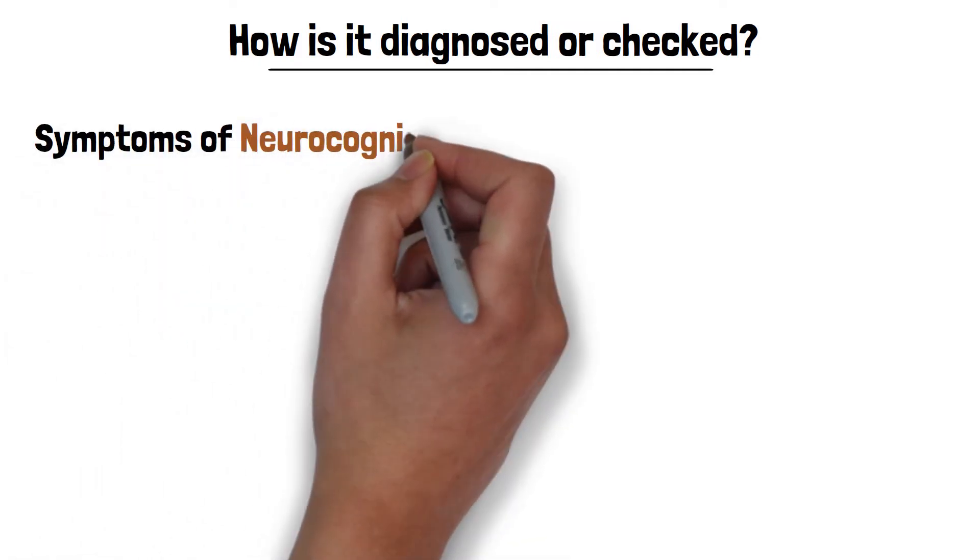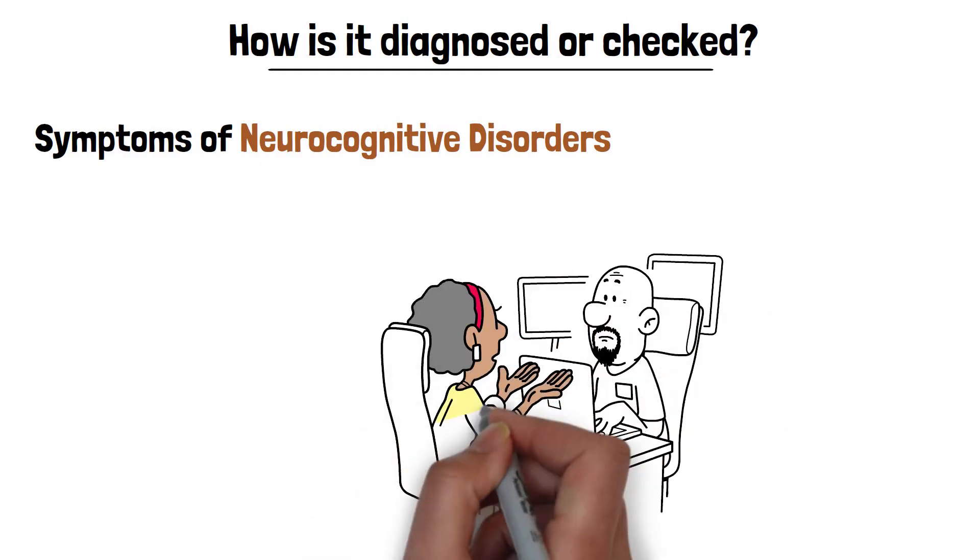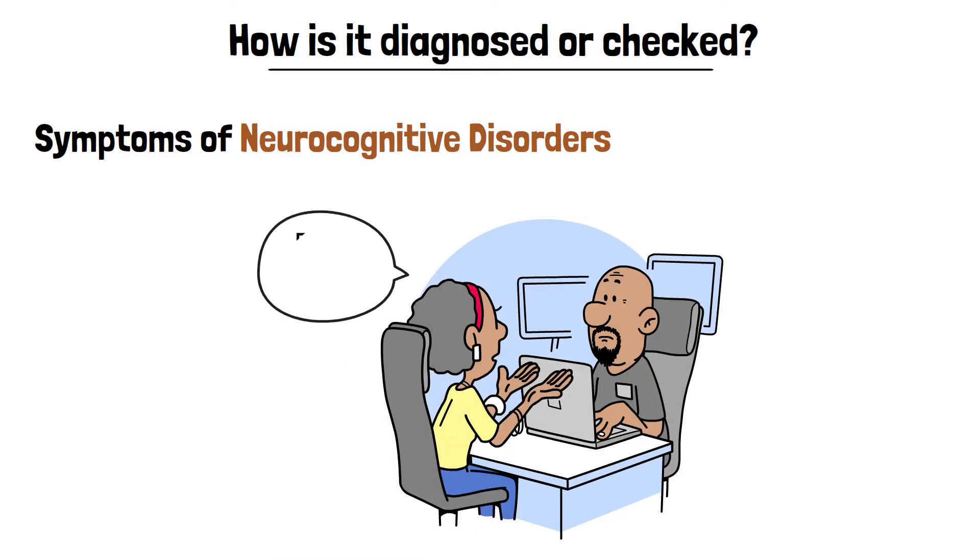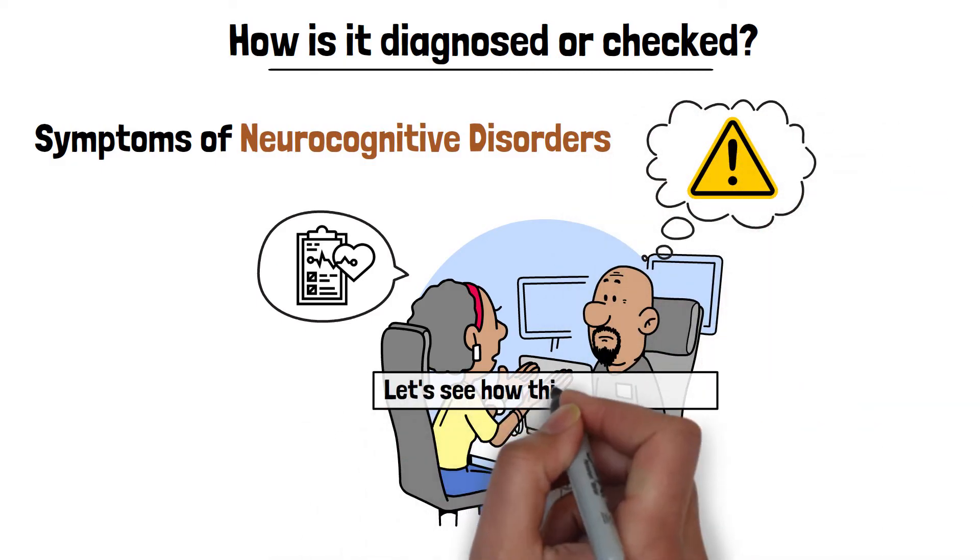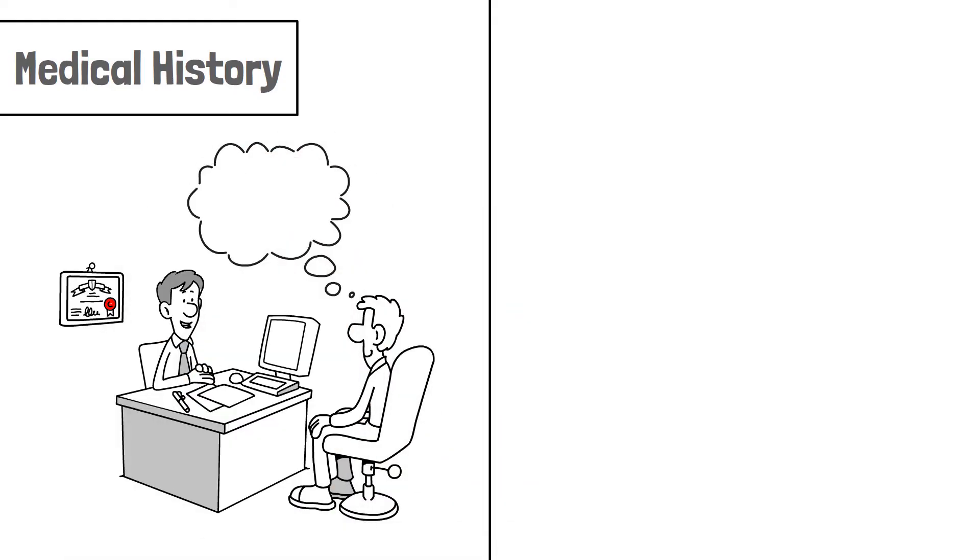When someone shows symptoms of neurocognitive disorders, consulting a doctor or health specialist becomes very crucial. The process of examination or diagnosis involves several steps, which tell us what the actual problem is. Let's see how this process goes. So let's start with medical history. First, the doctor wants to know the person's medical history or complete medical background. This is to check if there was any previous illness or if they are taking any medicines that could be showing symptoms.